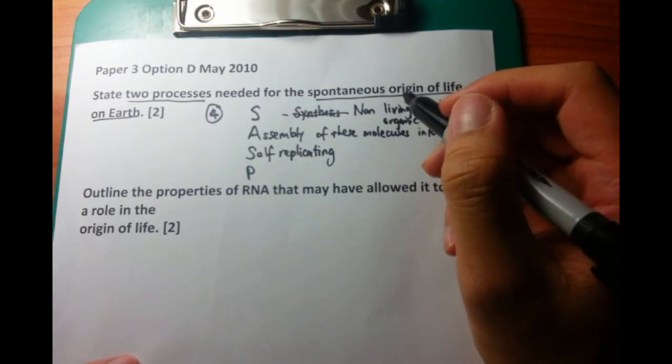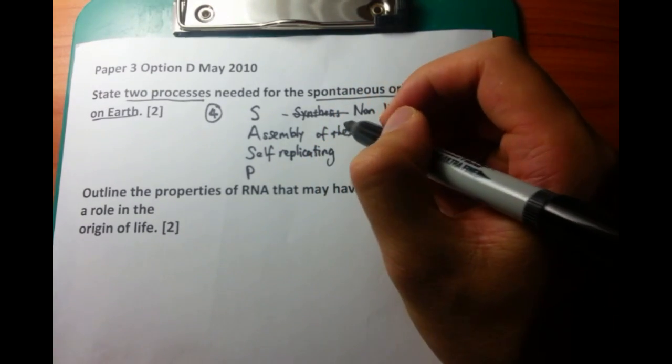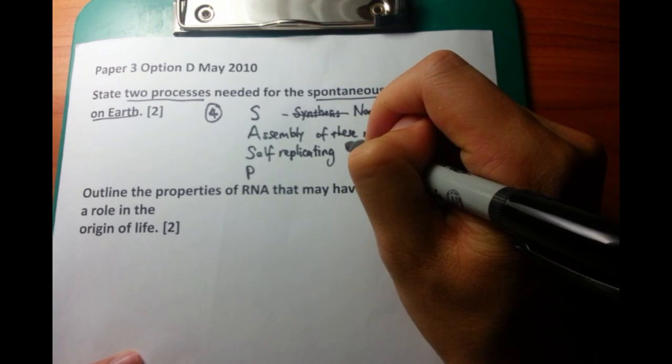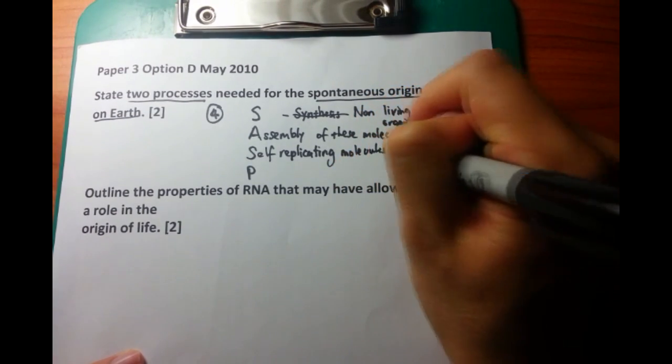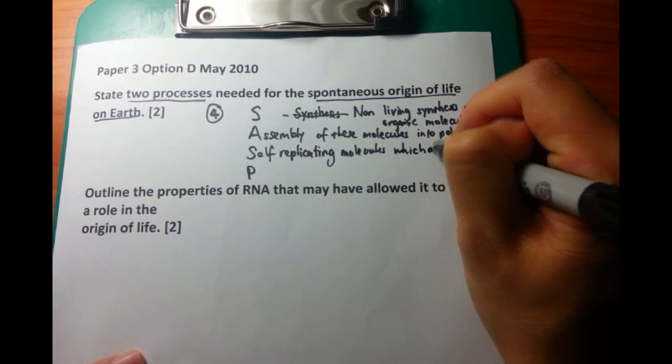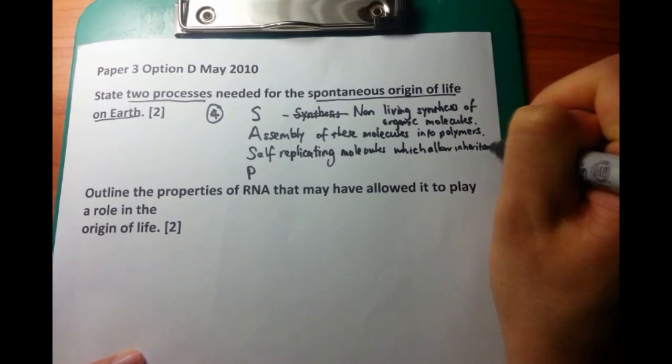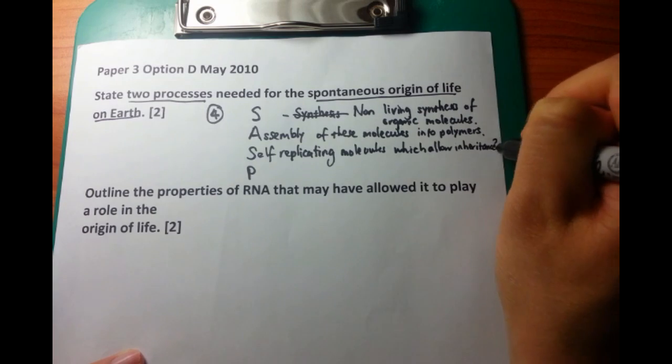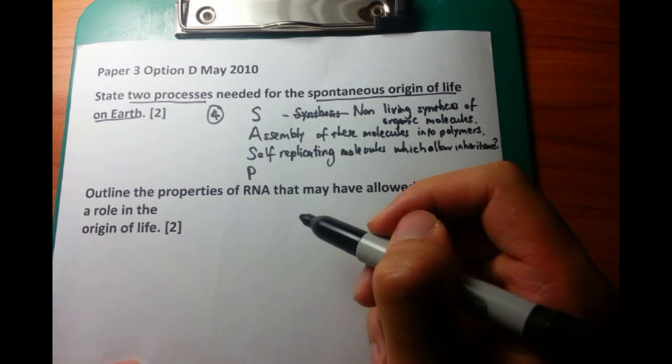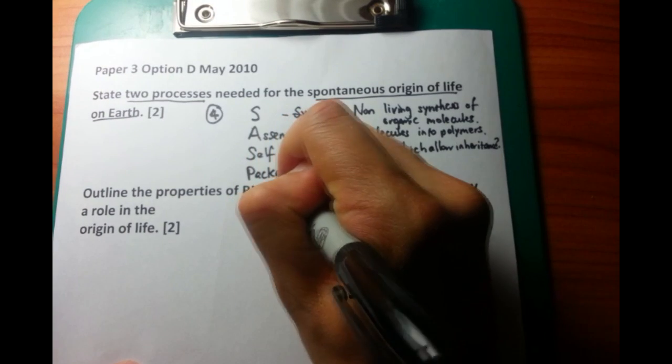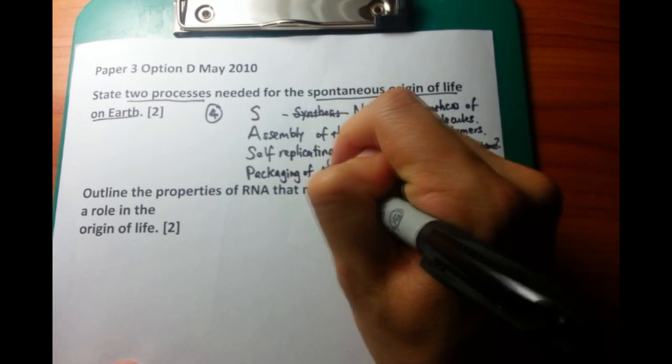Now the third point which you can put down is, somewhat along the same tangent, you need to have self-replicating molecules which allow inheritance. And essentially what they're talking about here is DNA. So these are self-replicating molecules. For example, you have DNA which can be replicated using enzymes, and they allow inheritance of certain genes or certain traits.